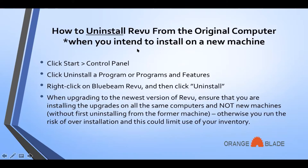How to uninstall Review from the original computer when you intend to install it on a new machine — for example, if your computer is about to crash or you're getting a new computer. Click Start and Control Panel, click Uninstall a Program or Programs and Features, then right-click on Bluebeam Review and click Uninstall. When upgrading to the newest version, ensure you are installing upgrades on all the same computers and not new machines without first uninstalling from the former machine. Otherwise you run the risk of over-installation, which could limit your use of inventory.